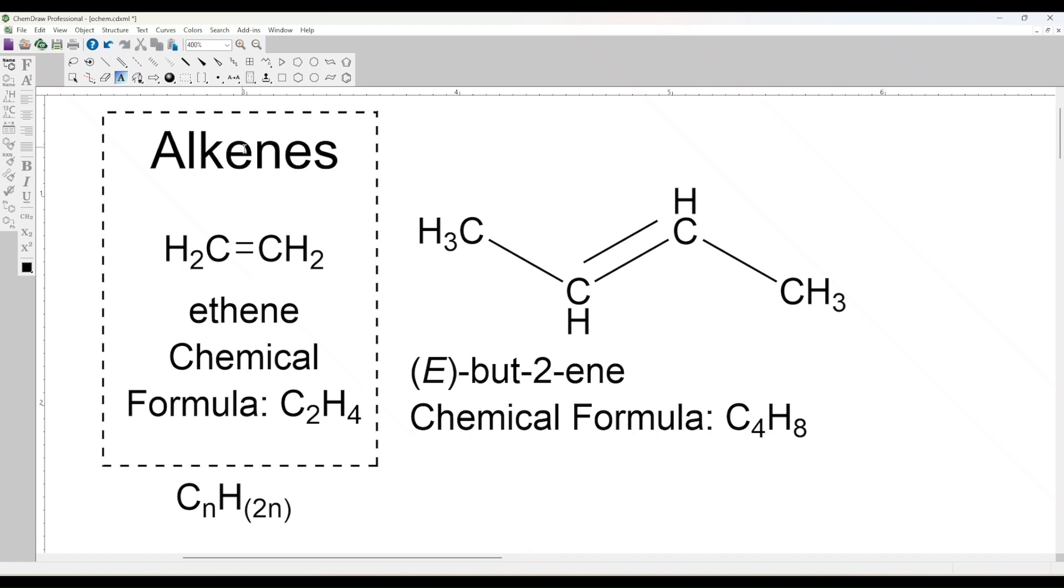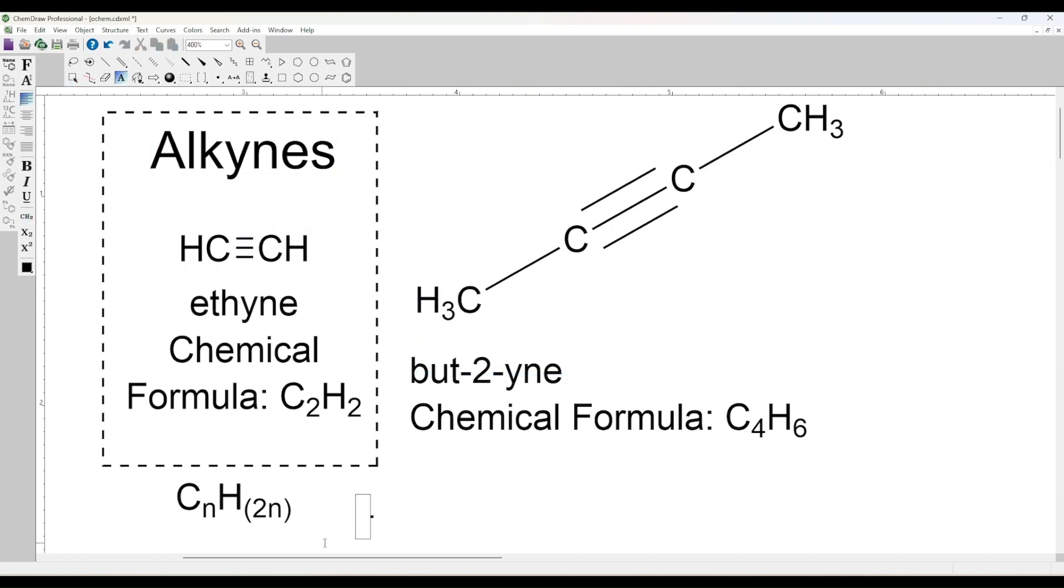Last are alkynes, which contain at least one triple bond, with the general formula CnH2n minus 2. An example is ethyne, also known as acetylene.